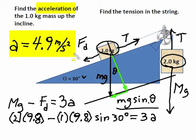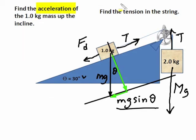A is 4.9 meters per second squared. Well, next, we want to find the tension in the string. So let's clear our surface.